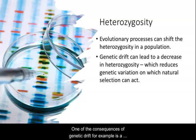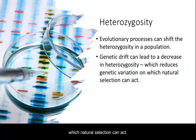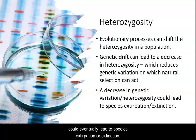One of the consequences of genetic drift, for example, is a decrease in heterozygosity, and one of the key parts of evolution is maintaining genetic variation so we have sufficient genetic variation on which natural selection can act. So a decrease in heterozygosity is often a reason for concern that genetic variation is being lost in a population, which could eventually lead to species extirpation or extinction.